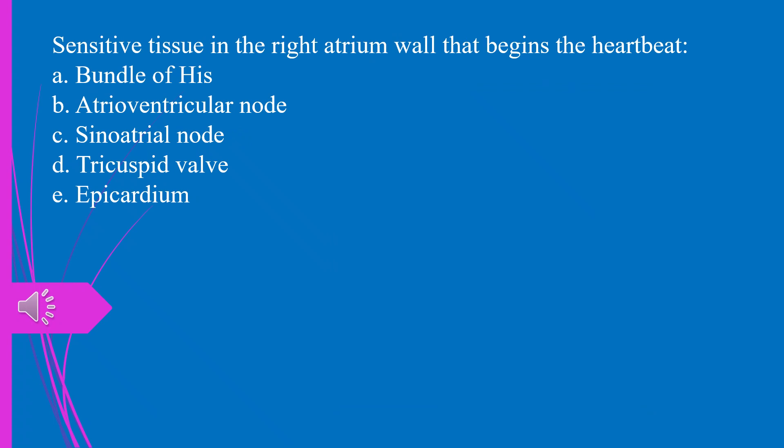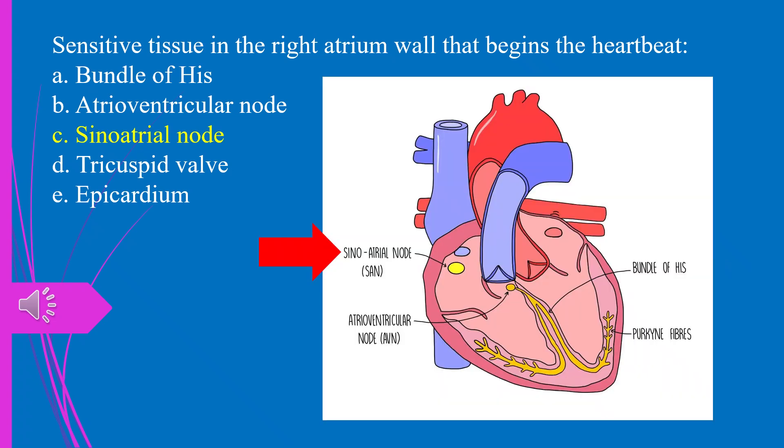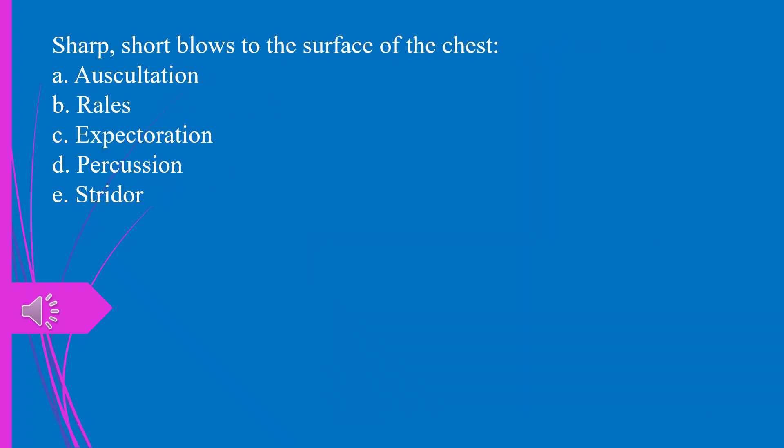Question 28. The sensitive tissue in the right atrium wall that begins the heartbeat: a) bundle of His, b) atrioventricular node, c) sinoatrial node, d) tricuspid valve, e) epicardium. The answer is c, sinoatrial node.